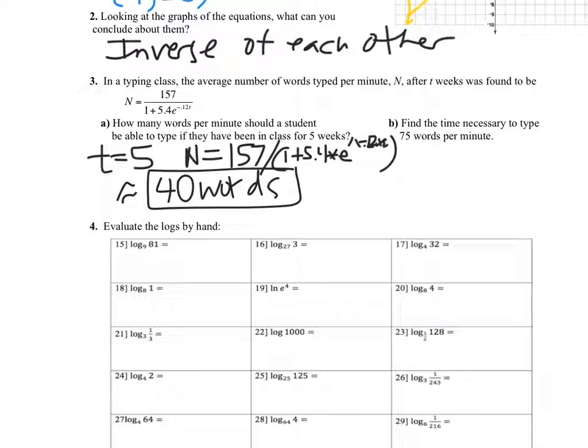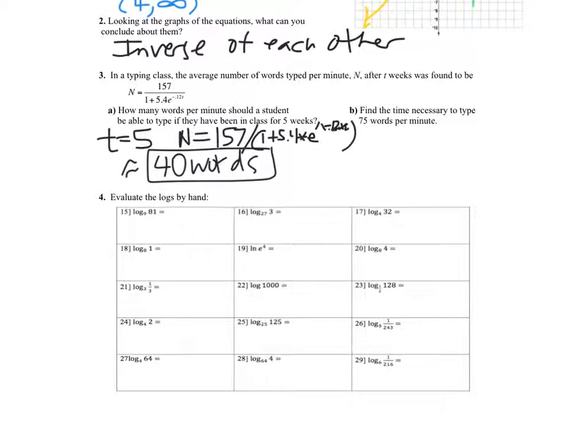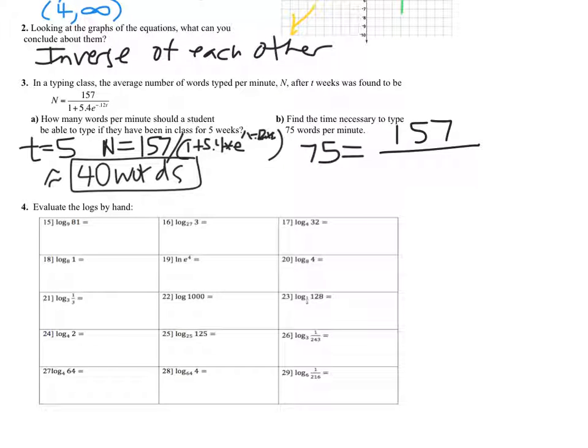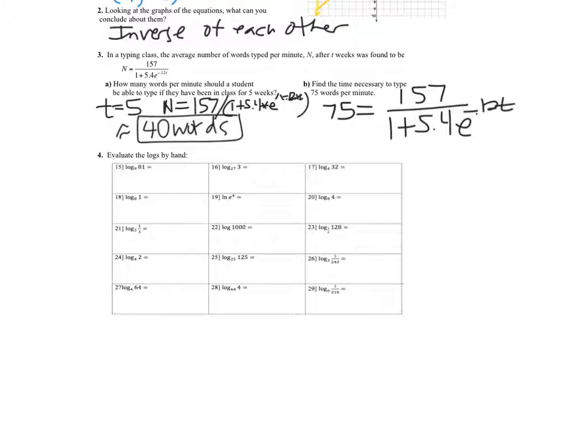Is that pretty good? Or no? It's kind of average. Average. Yeah. Okay. Now I want to get to be a better typer. So find the time necessary to type 75 words per minute. This is a lot different, isn't it? Okay. 75 goes in for N now. And we're going to set 75 equal to 157 over 1 plus 5.4 times E to the negative 0.12 T. We can solve this algebraically. We just don't know how yet. Or maybe you do from last year. But we haven't done that this year. So what I would do is I would set 75 equal to Y1. Okay. We'll say that's going to be our Y1. And then this whole side will be Y2. And I want to find the intersection of them. So let's practice doing that.